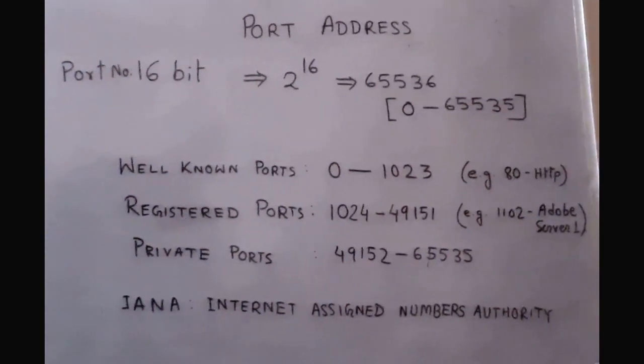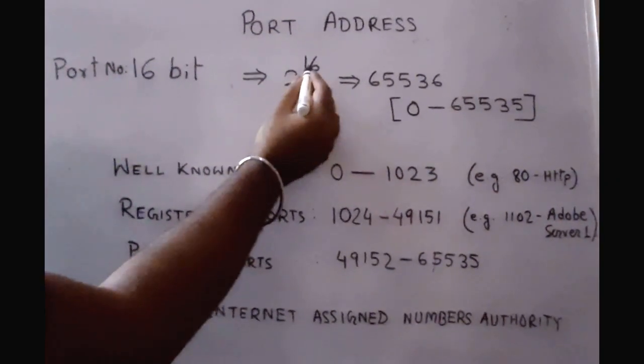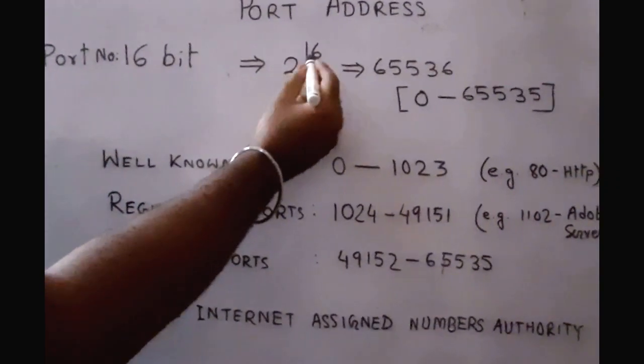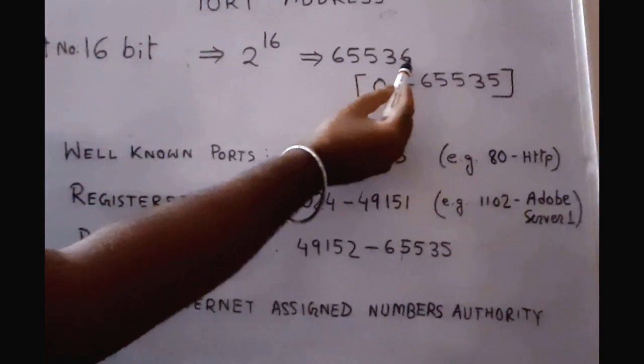That means we have total 2 to the power 16 port numbers. 2 to the power 16 means 65,536. That means it ranges from 0 to 65,535.